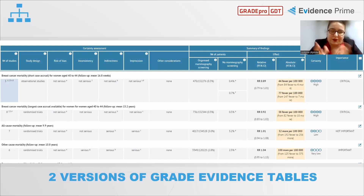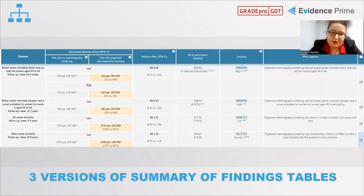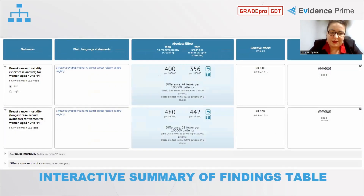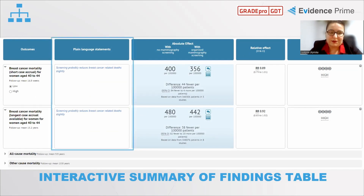Regarding the work itself: GRADEpro sets up frameworks including two versions of GRADE evidence tables and three versions of summary of findings tables according to Cochrane standards. There is also an interactive summary of findings table designed for user interaction and presenting results to the wider public — for example, plain language statements allow you to put findings in words that are simpler to understand for people who are not specialists.